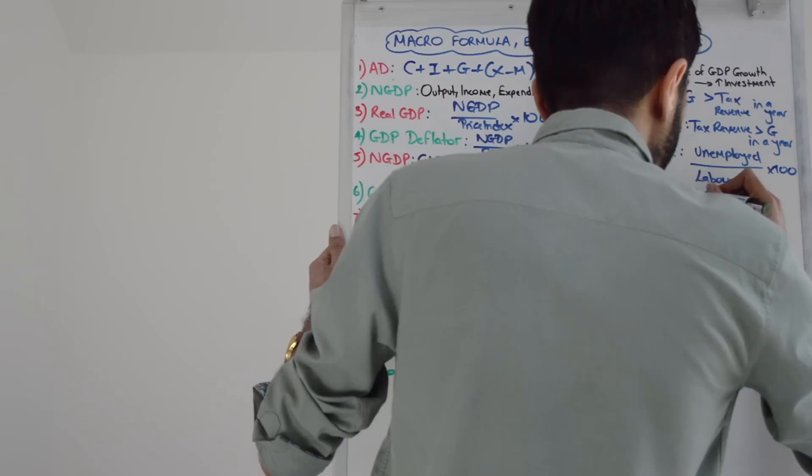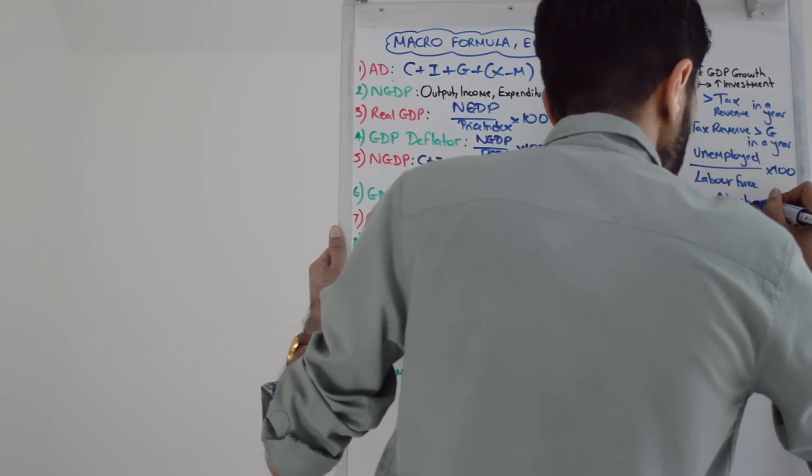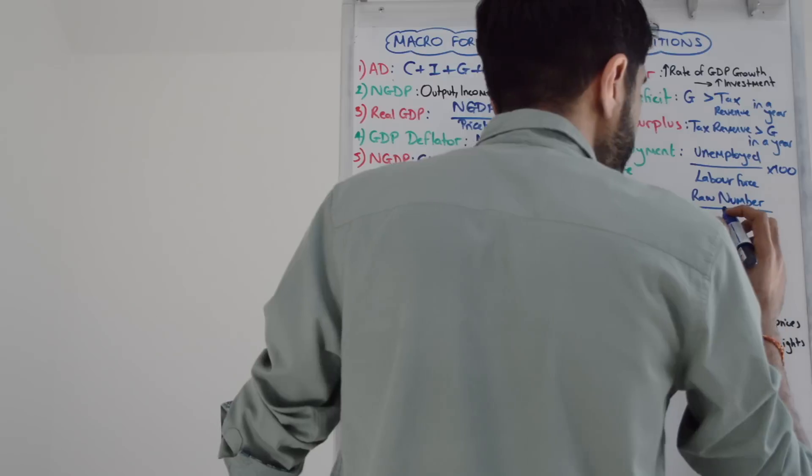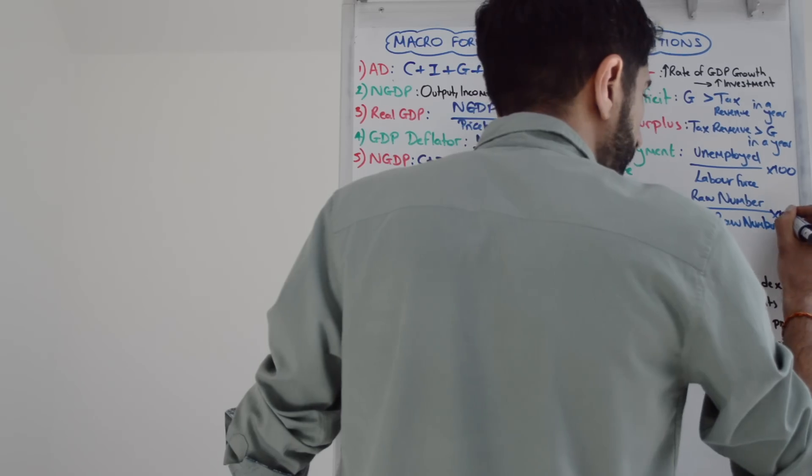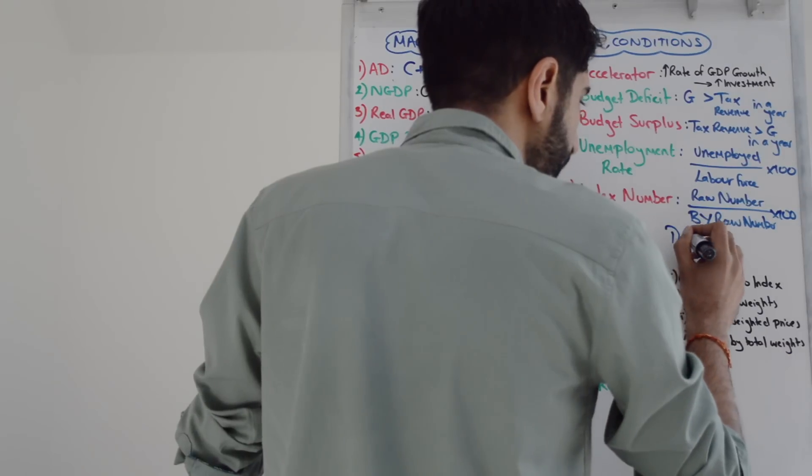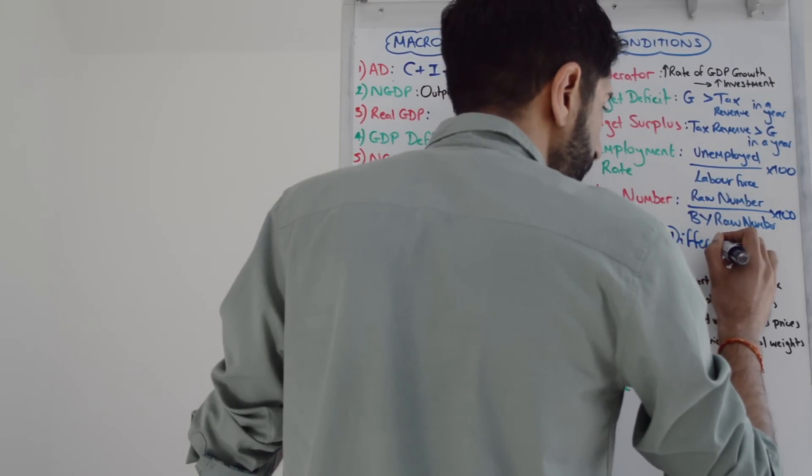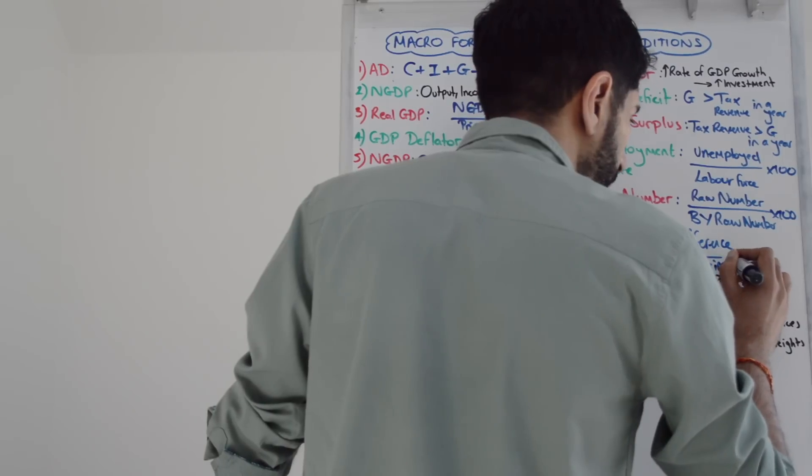To work out an index number, you take the number you want to convert - let's call that the raw number - and divide by the raw number in a base year, then again multiply by 100. To work out a percentage change, it's just the difference between two numbers divided by the original number times 100.